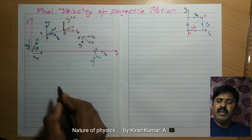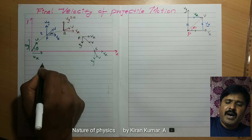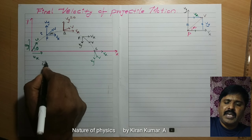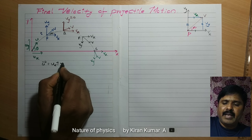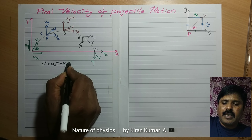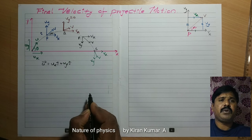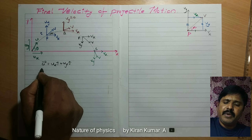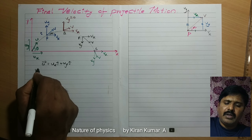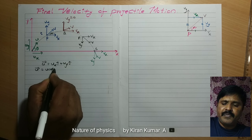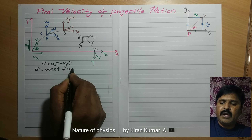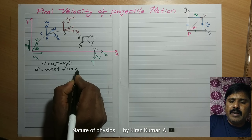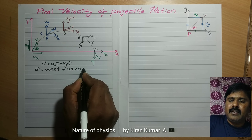Initial velocity U bar is equal to Ux i cap plus Uy j cap. Here, Ux is equal to U cos theta and Uy is equal to U sin theta.